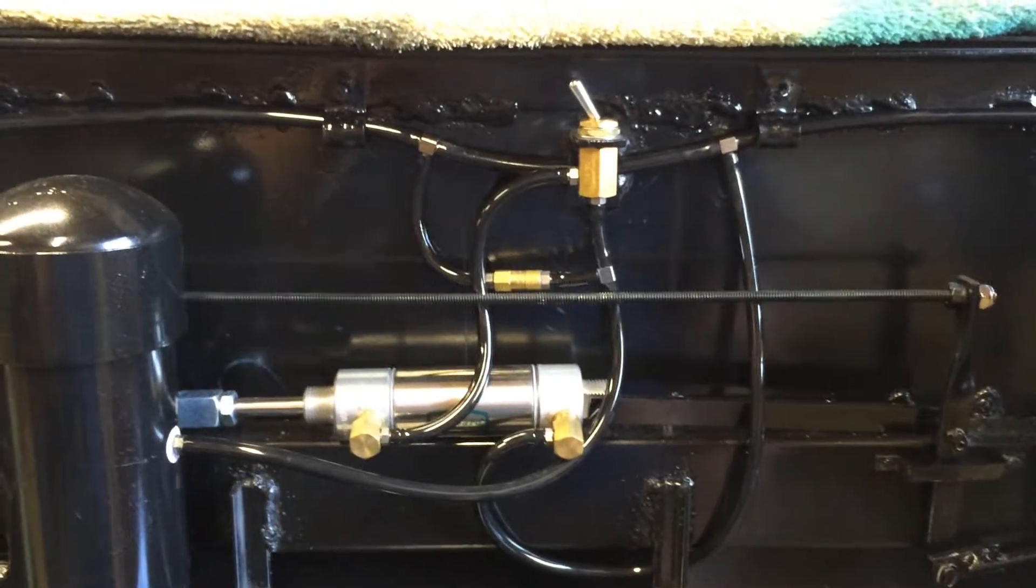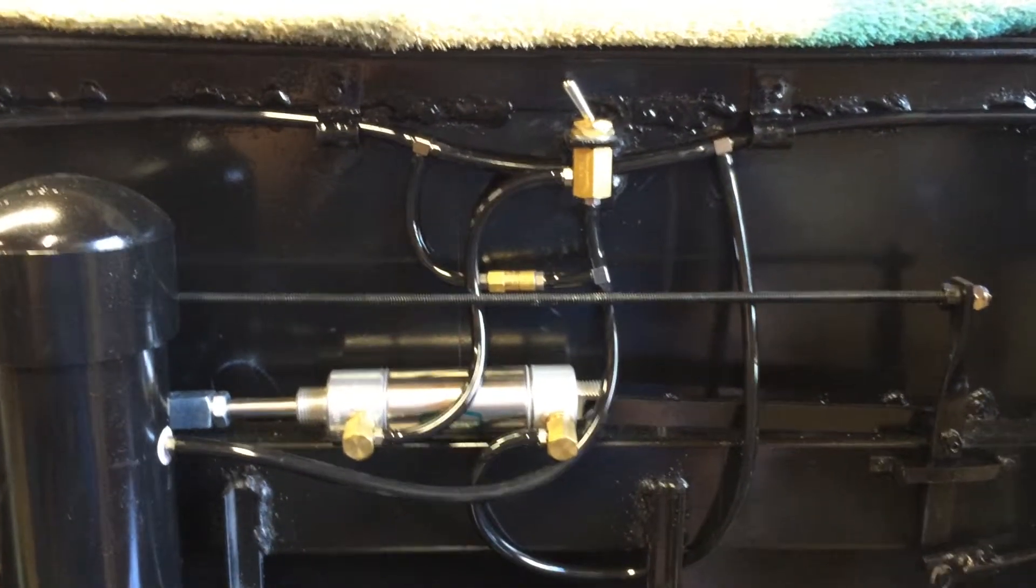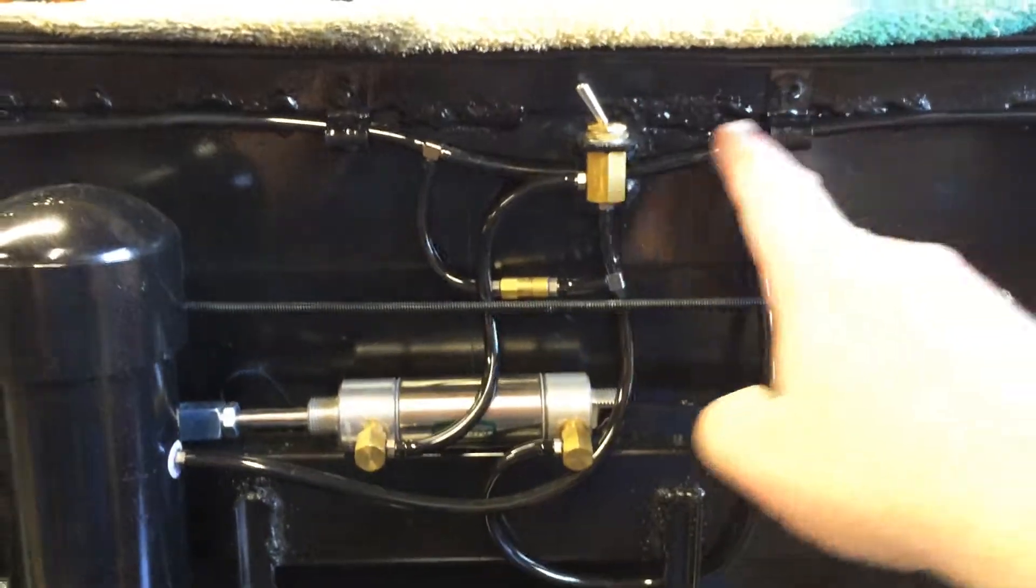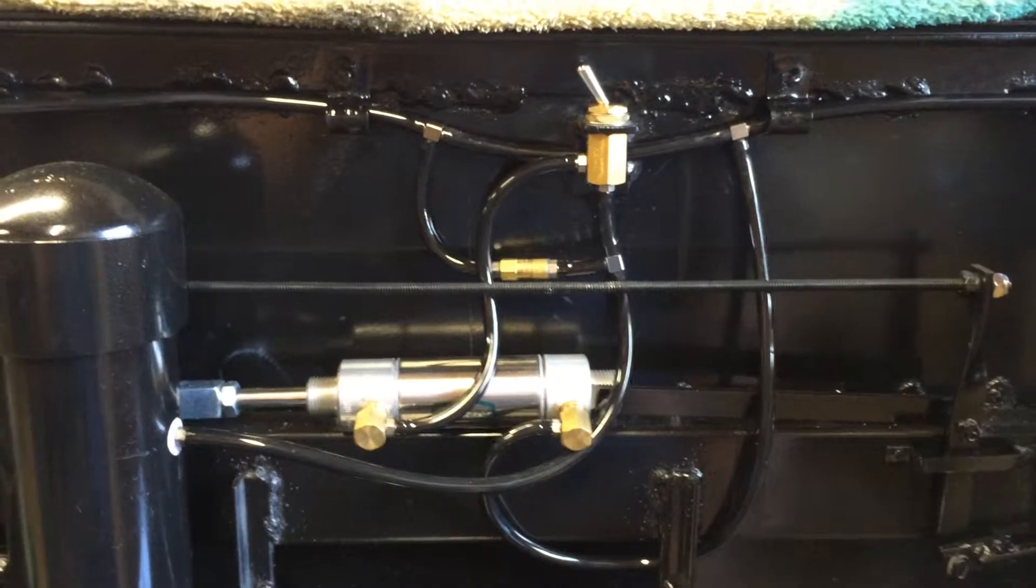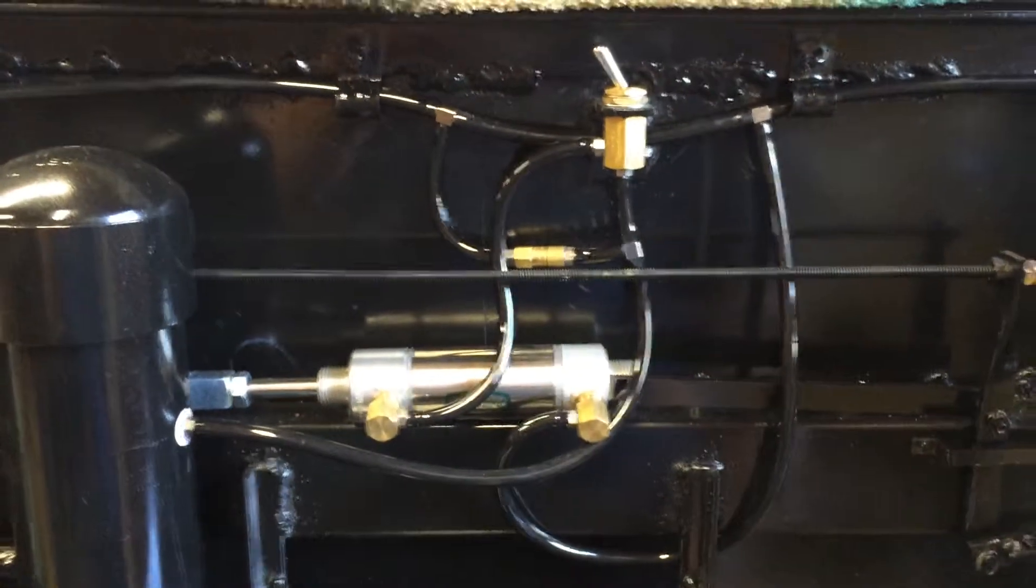We're ready for a test of the brakes on the Kitsap Live Steamer Caboose. The train line has been charged with compressed air. In fact, the whole system is charged, including the reservoir.